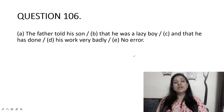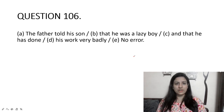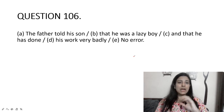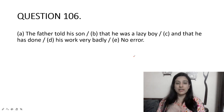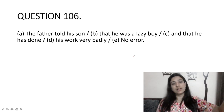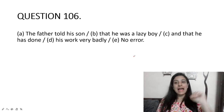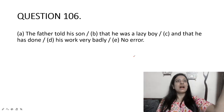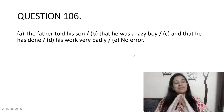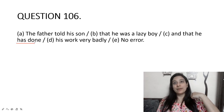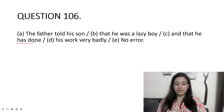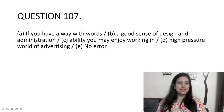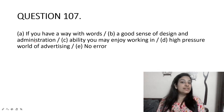The father told his son that he was a lazy boy and that he has done his work very badly. The whole sentence is in past tense. In option C, 'has done' makes it present perfect, but you cannot use present perfect here. It must be 'had done,' because you have to match the tense of the sentence: 'the father told his son that he had done his work very badly.'